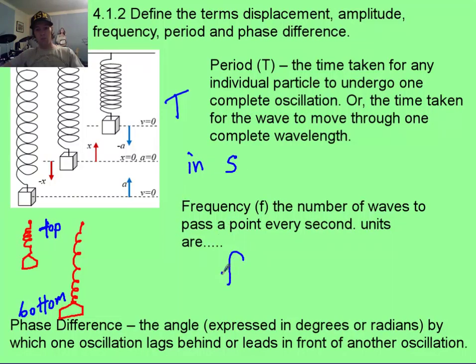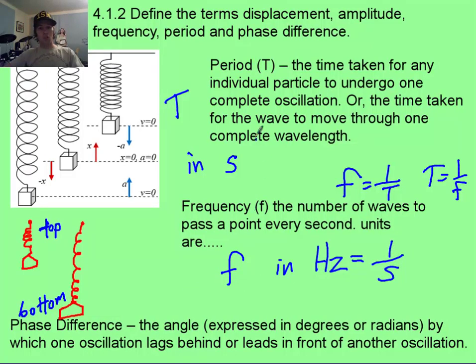Frequency, we use the small f, and this is going to be in the units of hertz. The relationship between them is pretty simple, because frequency is going to be the inverse of period, or period's the inverse of frequency. A hertz is equal to 1 over seconds. So if you have a period of half a second, 1 over 0.5 would give you a frequency of 2 hertz.